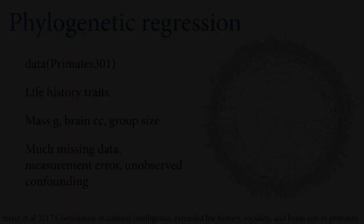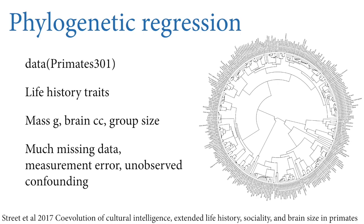We'll work with the primates301 dataset in the rethinking package, data provided by Sally Street and co-authors from their 2017 paper. The dataset contains life history traits of 301 species. We'll focus on three: adult mass in grams, brain volume in cubic centimeters, and average social group size. All of these vary a lot in primates — body size varies, brain size varies tremendously even after accounting for body size differences, and group sizes vary from solitary primates to humans living in very large groups. This is a very realistic dataset, but there is a lot of missing data and measurement error that we'll postpone dealing with today.